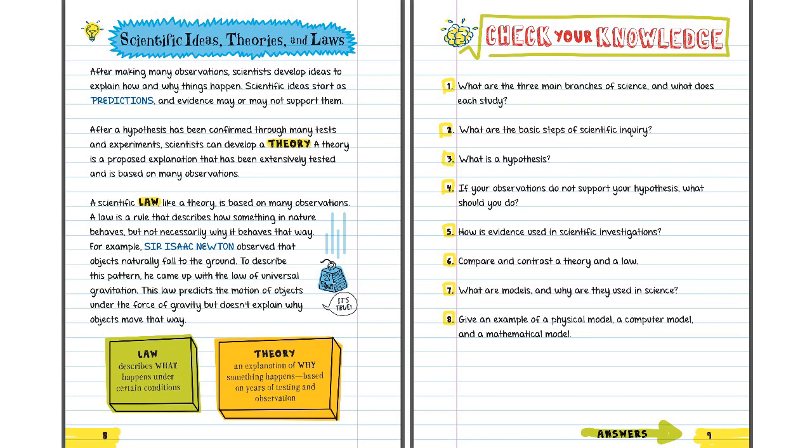Number six. Compare and contrast a theory and a law. Here they are right here. A theory is an explanation of why something happens. And it's been based on testing and observation. A law describes what happens under certain conditions.